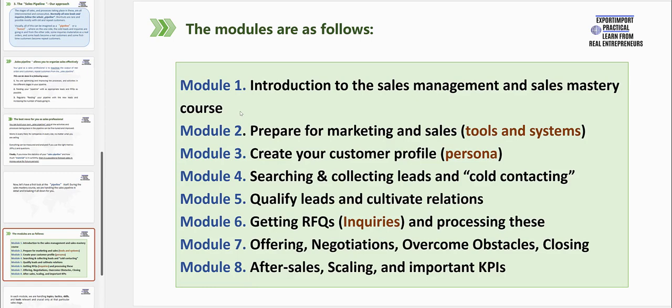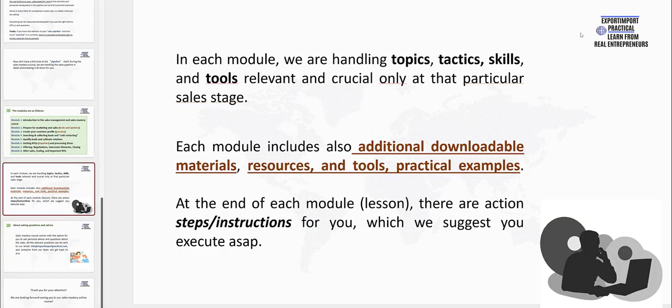All the modules are coming in the right order, starting from the beginning of the sales pipeline and moving on to the end. In each module of the Sales Mastery Online course, we are handling topics, tactics, skills, and tools relevant and crucial only to that particular sales stage. And in each module there are also additional downloadable materials, resources, tools, and practical examples for you. At the end of each module, there are action steps and instructions for you, which we suggest you execute as soon as possible. Because in sales, what really matters is taking action. It's not enough just learning, reading, or watching what we are going to teach you in the program — what really matters is that you put this into action in your own organization.